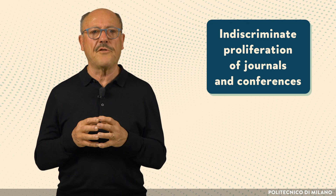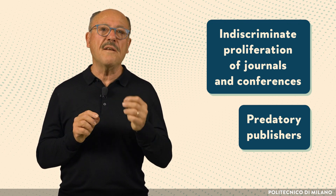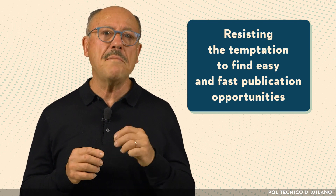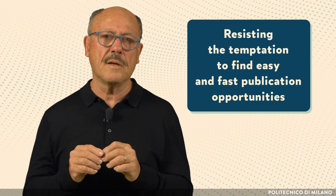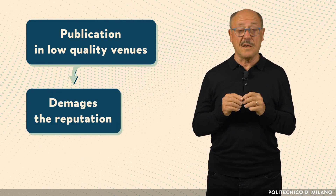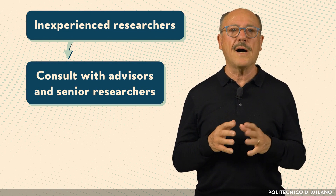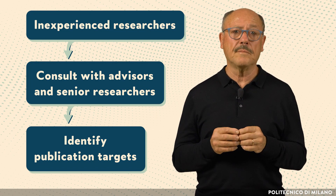In another lecture I mentioned the recent indiscriminate proliferation of journals and conferences, and I even used the derogatory term predatory publishers to name publishers who offer easy and fast publication to inexperienced researchers with the objective to attract submissions. I strongly recommend resisting the temptation to shortcut the difficulties that may be involved in publishing in serious journals and conferences by trying to find easy and fast publication opportunities. Publication in low-quality venues damages the reputation instead of being a sign of distinction. Inexperienced researchers should consult with their advisors and other senior researchers to identify good publication targets, with the goal of building knowledge that enables them to navigate the publication jungle.